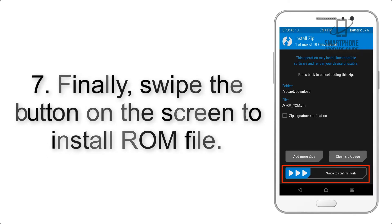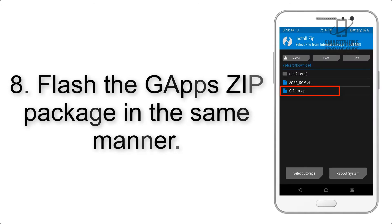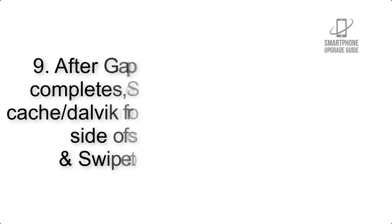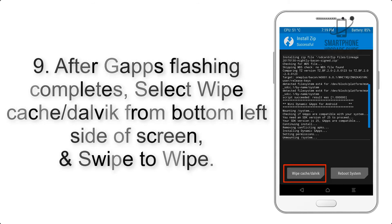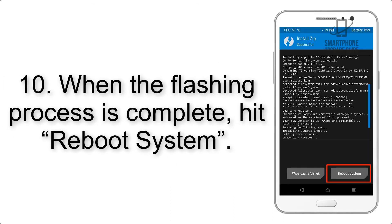Step 7: Swipe the button on the screen to install the ROM file. Step 8: Flash the GApps zip package in the same manner. Step 9: After GApps flashing completes, select Wipe Cache and Dalvik from the bottom left side of the screen and swipe to wipe.